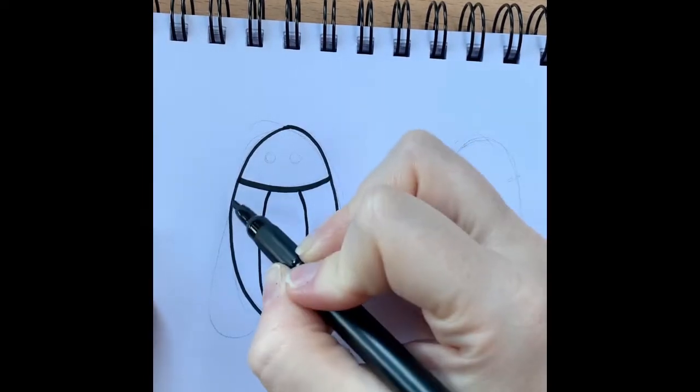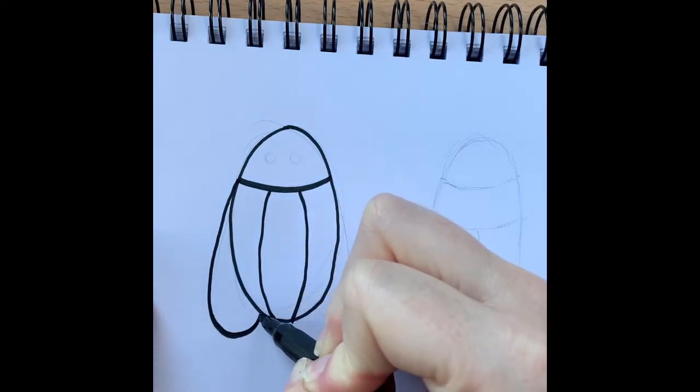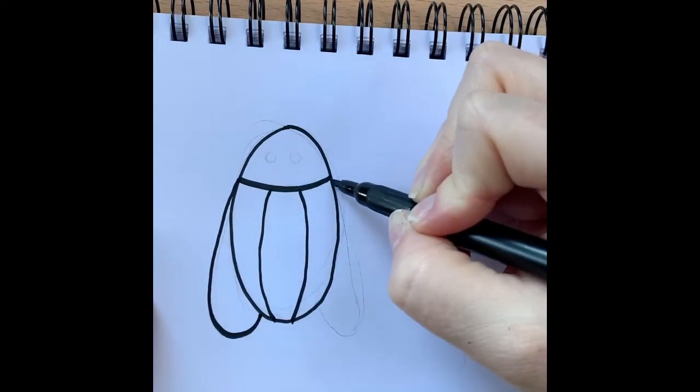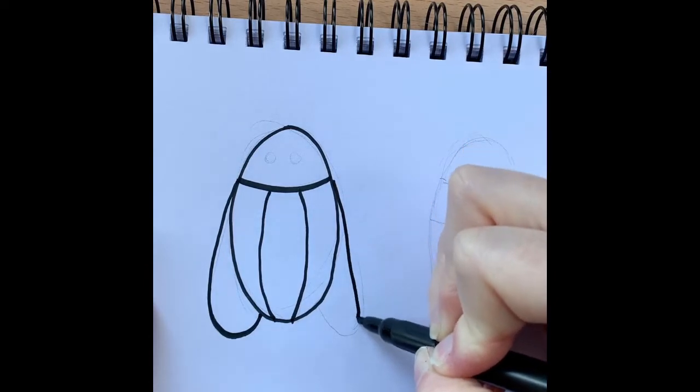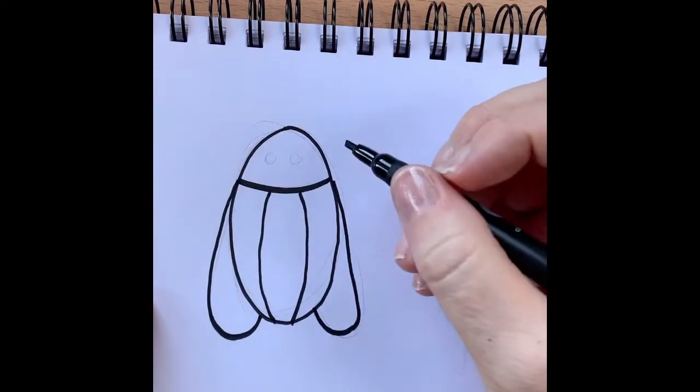And we're going to do some wings and we're going to come out down, curved line at the bottom, a line down, curved bottom. That's our first shape.